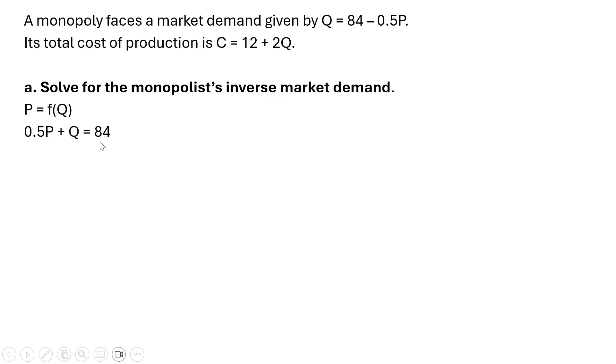Moving a few things around, moving this minus 0.5p over to the other side, and now moving q to the right hand side, dividing through by one half, simplifying, we get the inverse market demand: Price equals 168 minus 2q.